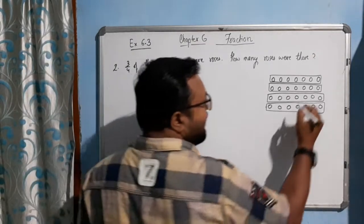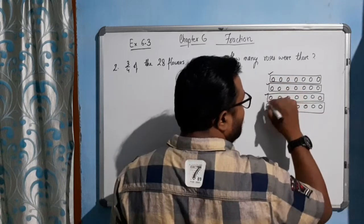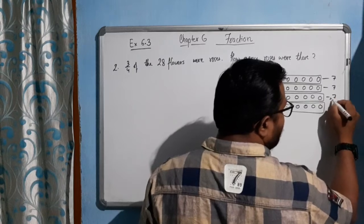Now three packets out of four packets. See if you take three packets: one packet, two packet, and three packets, how many flowers we will get? Seven flowers and seven flowers and seven flowers if we add.